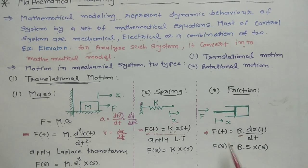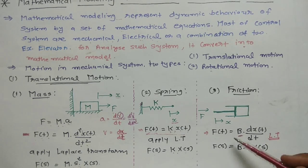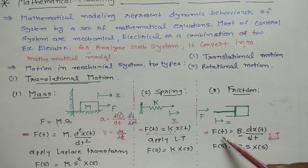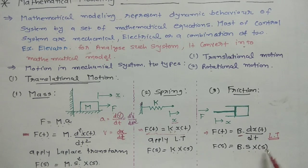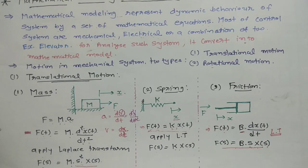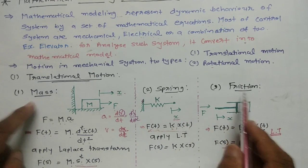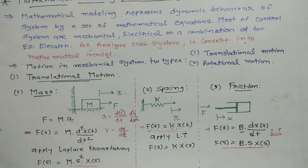For friction, when we apply the Laplace transform, we can write: F(s) = B · s · X(s), because there is one order of differentiation so we write s · X(s). That covers the three translational motion elements — mass, spring, and friction. Now we discuss rotational motion.